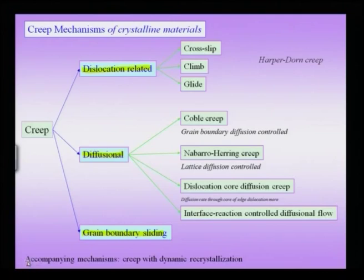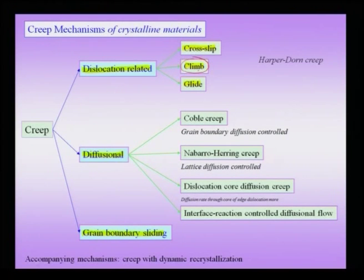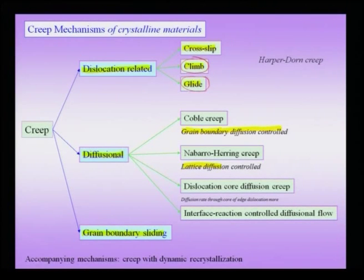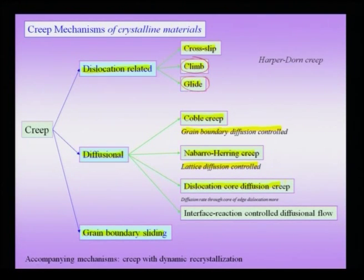Dislocation-related mechanisms include cross slip, climb, and glide. Climb requires higher temperatures because it involves vacancy diffusion of edge dislocations. Glide also becomes more thermally activated at high temperature. Diffusional mechanisms can involve grain boundary diffusion or lattice diffusion. In a fine-grain material, grain boundary diffusion becomes increasingly important. Grain-boundary-diffusion-controlled creep is called Coble creep; lattice-diffusion-controlled creep is called Nabarro–Herring creep. Pipe diffusion through dislocation cores can also influence creep.